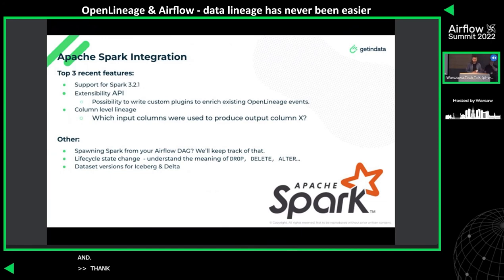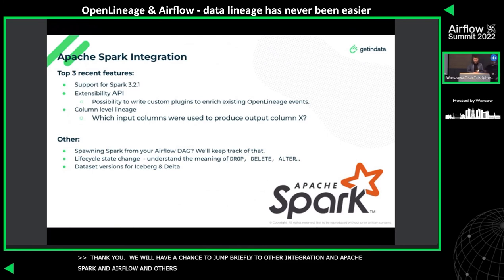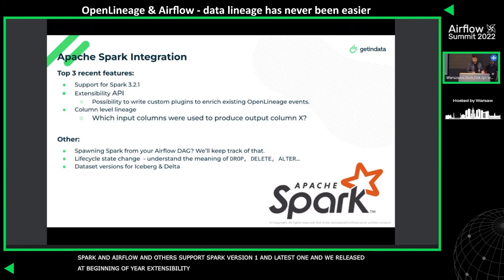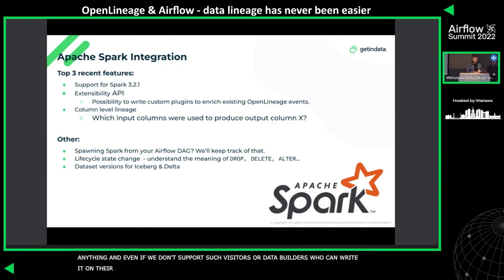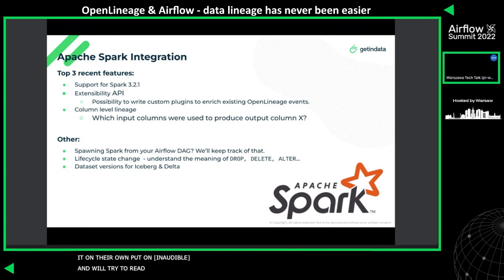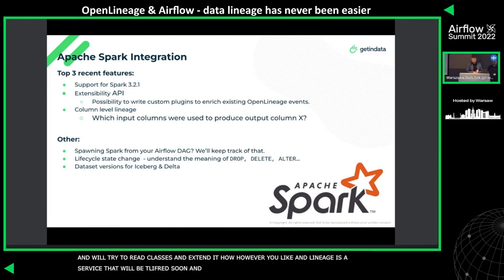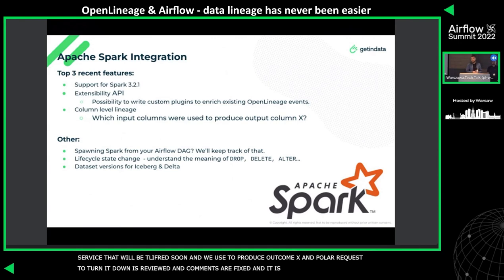Let's jump briefly to other integrations — Apache Spark is also often triggered from Airflow. OpenLineage already supports the latest Spark version. At the beginning of the year we released an extensibility API: within Spark you can read and write from anything, and even if we don't support a particular visitor or dataset builder, you can write it yourself — just put the jar on the classpath and the service loader will read your classes. Column-level lineage is a pretty cool upcoming feature, answering questions like: which columns were used to produce output column X. The PR is already reviewed and very close to being delivered.